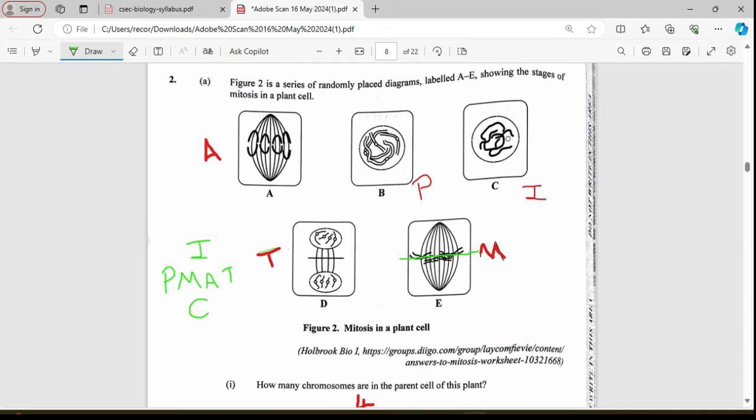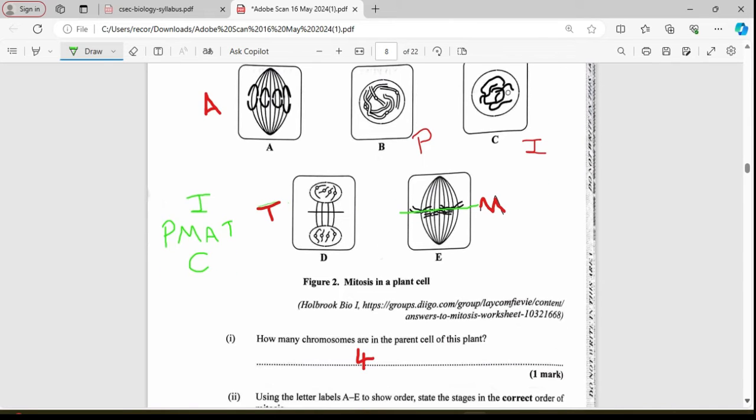So our first question, how many chromosomes are in the parent cell of this plant? Now, if here where we have telophase, we have two new nuclear envelopes forming, the diploid number of chromosomes, then we can count one, two, three, four. So the parent cell had four chromosomes. This is mitosis. And it ensures that the diploid number of chromosomes is passed on. That is the full number of chromosomes.